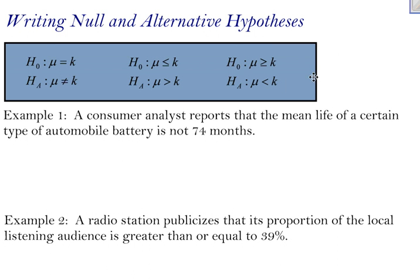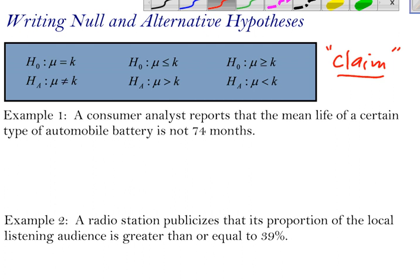So I want to write these. The first thing I'm going to start with is I'm going to look for the claim. The claim could show up, the claim that is being tested could show up in the alternative or the null hypothesis, either one. It just depends on what the claim is saying. So let's take a look here at example number one. It says, a consumer analyst reports that the mean life of a certain type of automobile battery is not 74 months.